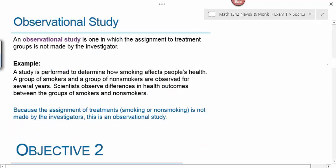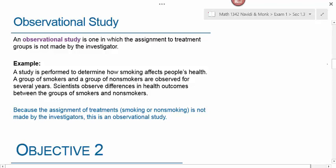An observational study is one in which the assignment to a treatment group is not made by the investigator. For example, a study to determine how smoking affects health observes a group of smokers and non-smokers for several years and notes differences in health outcomes. You're not assigning individuals to smoker or non-smoker groups because that would be unethical — you wouldn't force people to start or stop smoking. So when studying behaviors, we observe people based on behaviors they already possess.